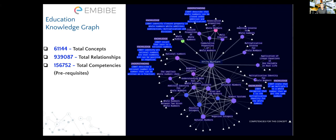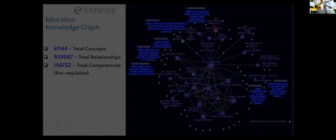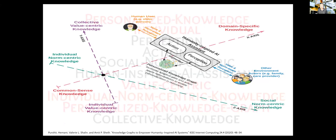This is a recent paper showing that knowledge is not only about capturing the domain, but AI systems are there to serve human needs and humans are complex beings. With humans, we have social norms, individual priorities, our own cultural leanings, common sense knowledge, and domain-specific knowledge that we usually focus on is only one aspect. There is a whole body of work that needs to be done for agents and AI systems to really understand the master - which is the human they are supposed to serve.